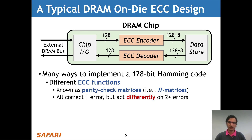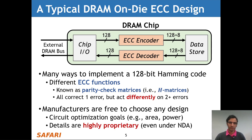All of these ECC functions correct one error, but they act differently on two or more errors. Manufacturers are free to choose any design they wish for this ECC function — based for example on circuit optimization goals such as layout area or power consumption — and the details of a particular implementation are considered highly proprietary, even under non-disclosure agreements.